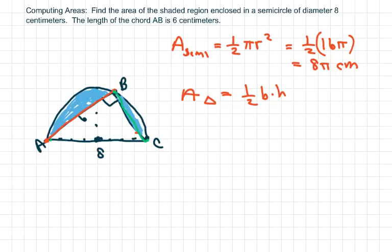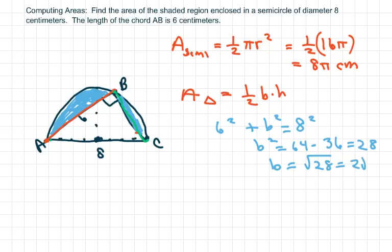So we're going to have Pythagorean theorem. We have A², which is 6², plus B², equals C², which is 8. So we get B² equals 64 minus 36, which equals 28. So B equals √28, which equals √(4×7), so that's going to be 2√7.